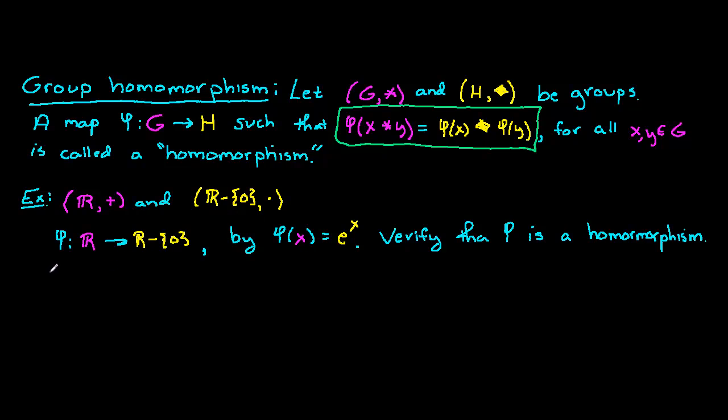Let's take any x,y ∈ ℝ and consider φ(x+y). Notice that I have addition here because the binary operation on our pink group, our domain group, is addition. What does it mean to take φ of an element? We've defined φ as exponentiation, so φ(x+y) = e^(x+y).